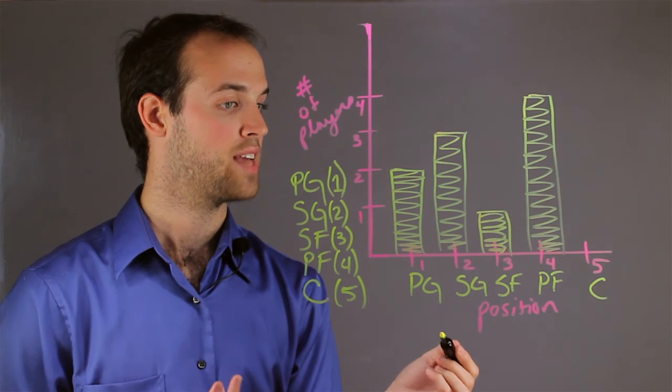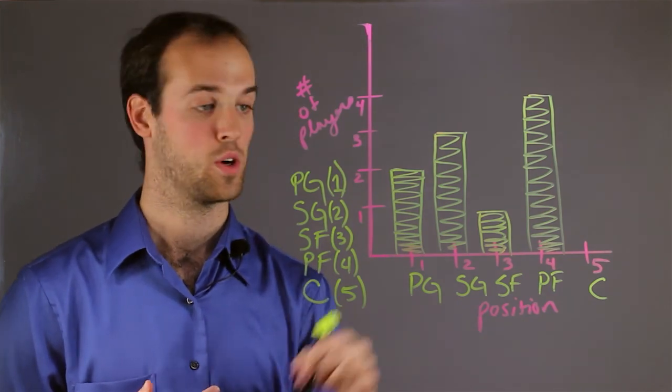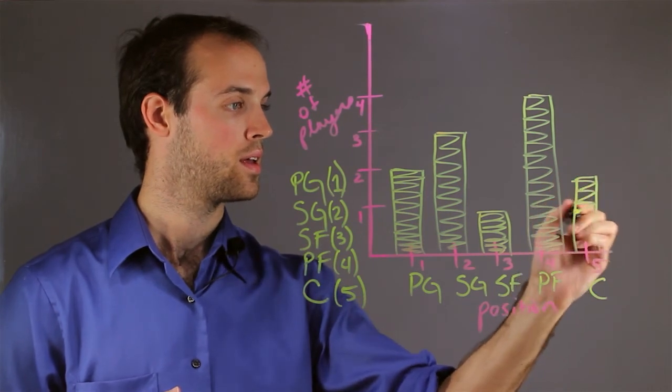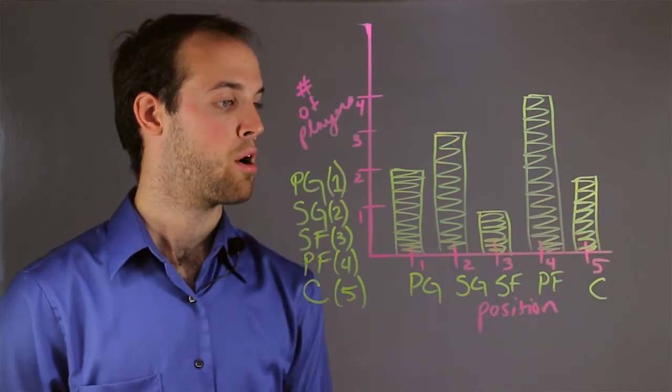And last but not least, I have centers, and let's say I have 2 of those. So I go across to 2, make my bar, and now I have my bar graph.